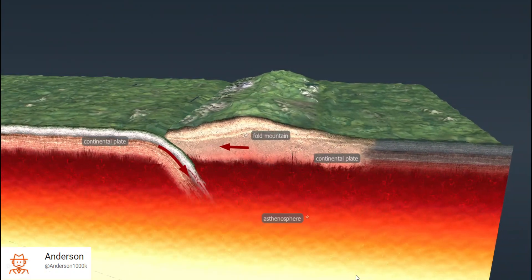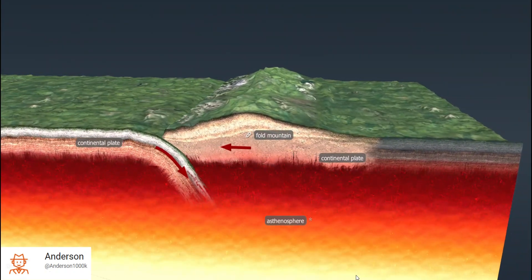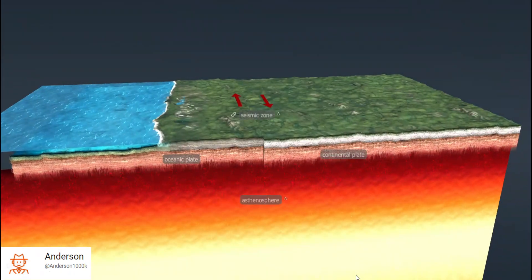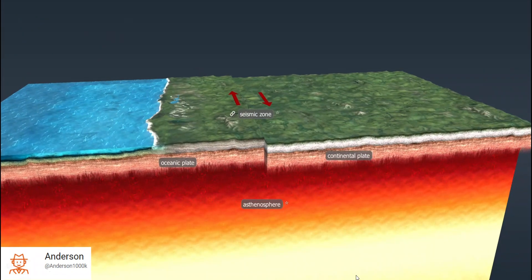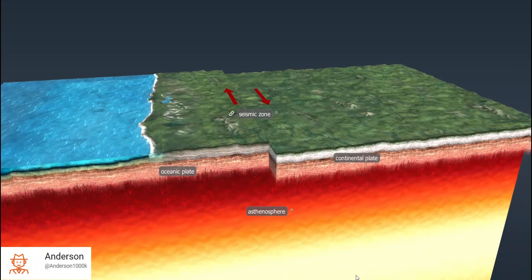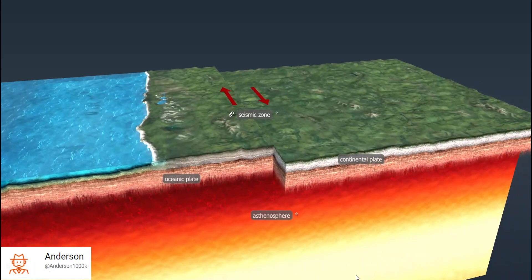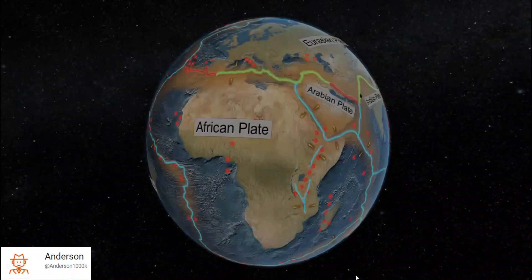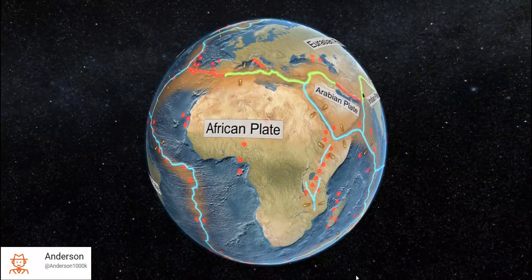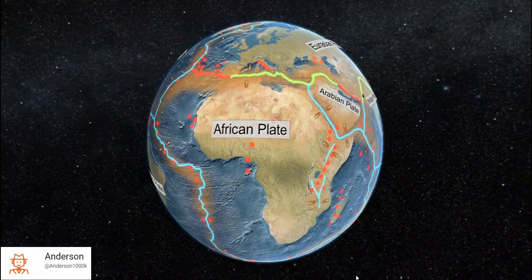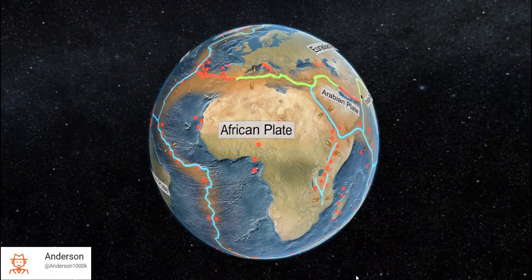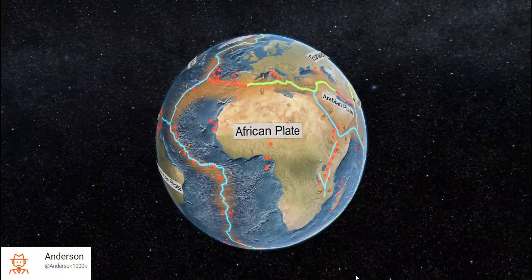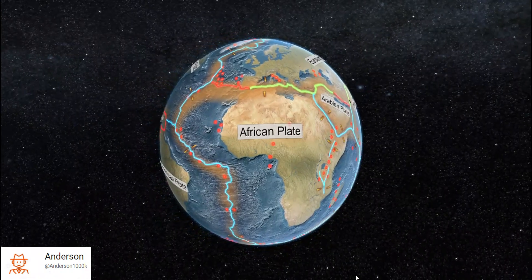Examples of mountain ranges formed as a result of subduction are the Andes and the Himalayas. On rare occasion, two adjacent plates slip along a fault, resulting in an earthquake. This is the case with the San Andreas Fault in California. Oceanic lithosphere is formed continuously at mid-ocean ridges and disappears at oceanic ridges. Thus, the size of continental plates and the location of dry land are continuously changing.